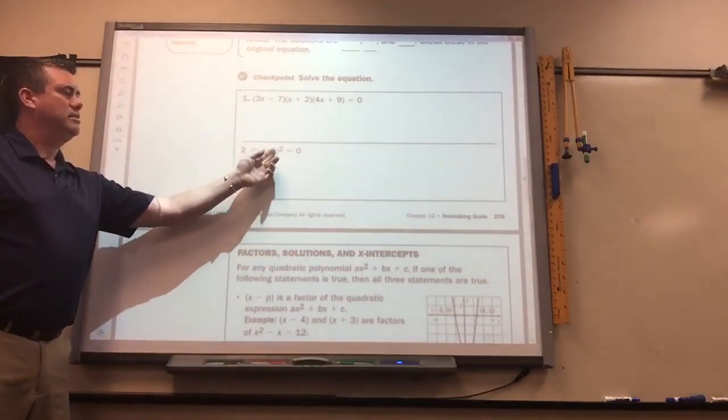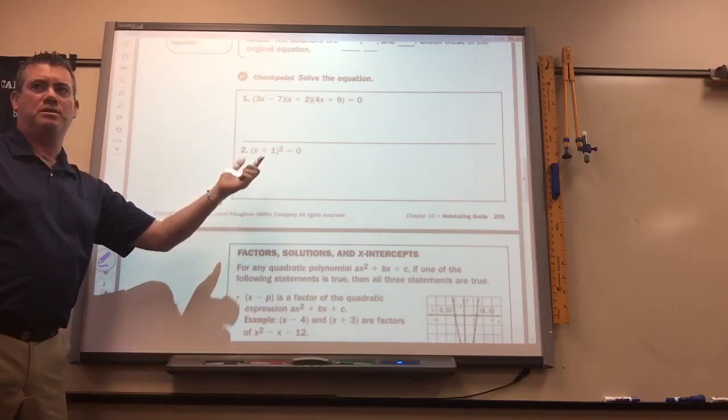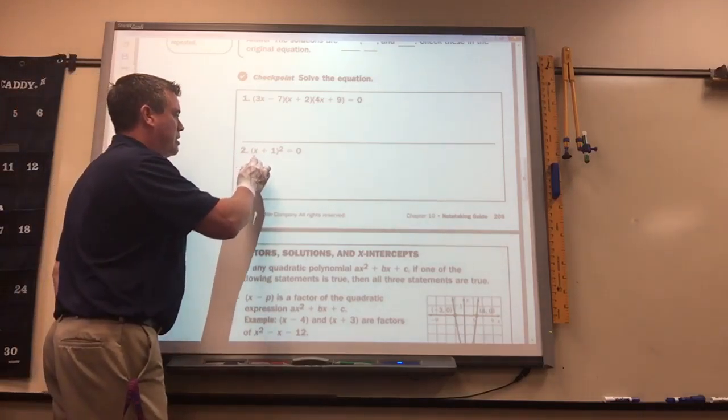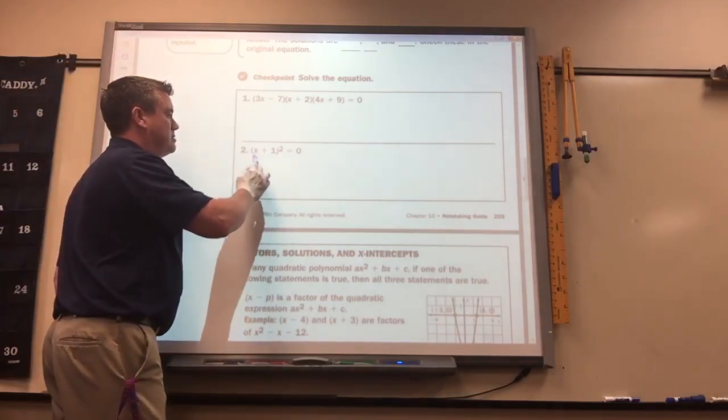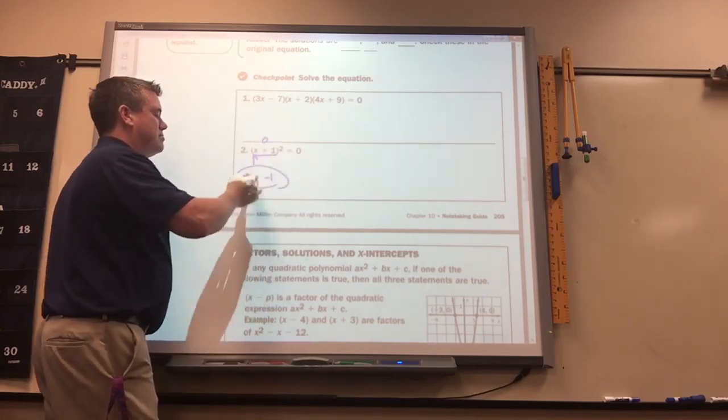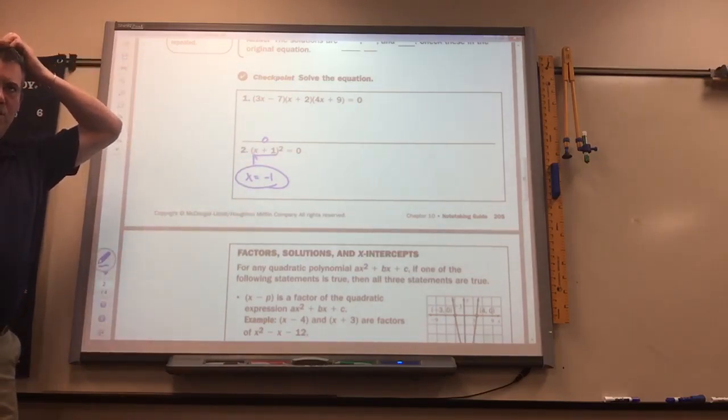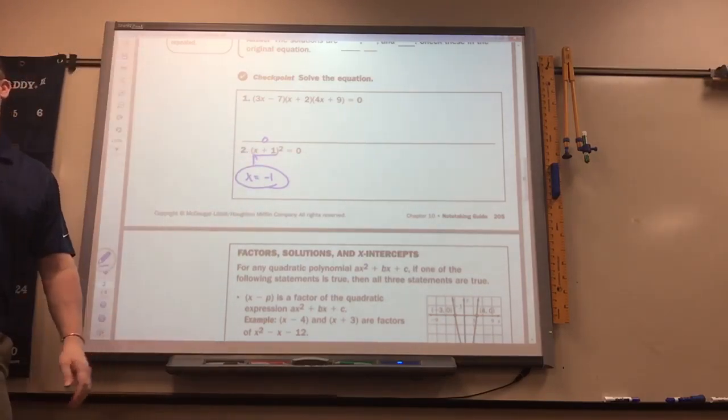So, here, x plus 1 squared just means it's x plus 1 times x plus 1. So, what are you going to put in there? To make it equal to zero? Negative 1. Those will just have one solution, but technically, it's called a double root. We don't need to worry about that yet.